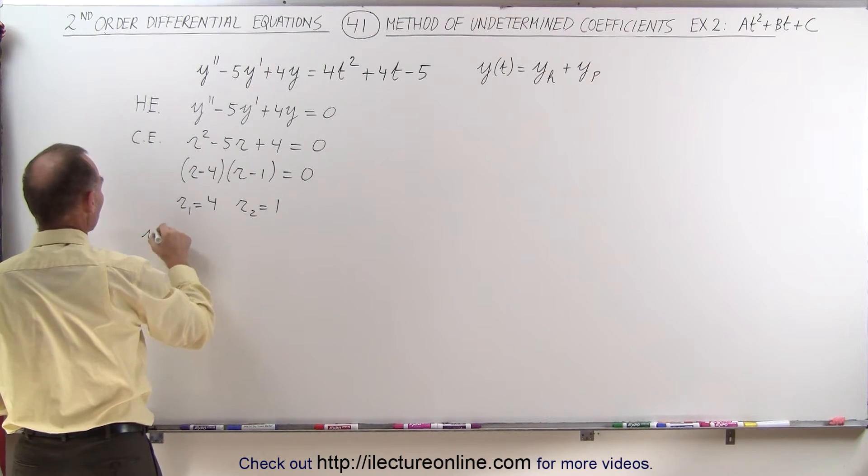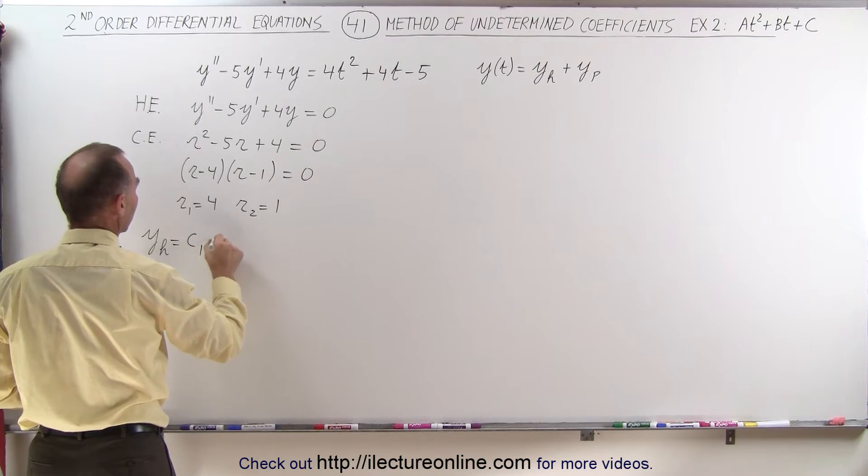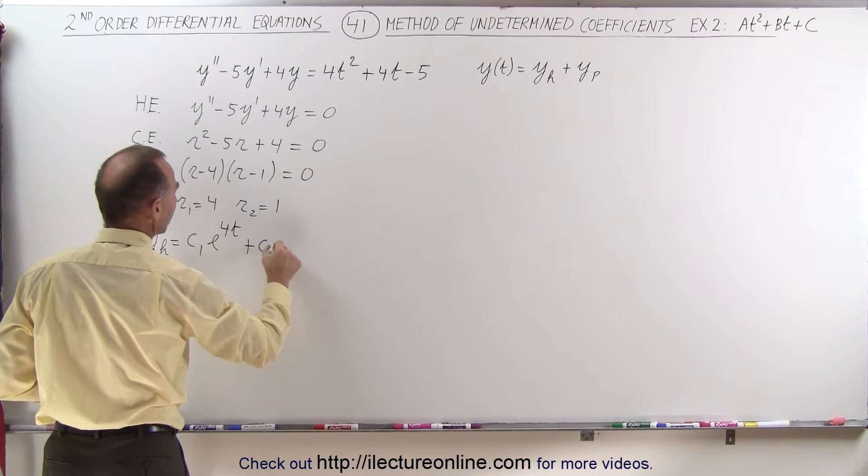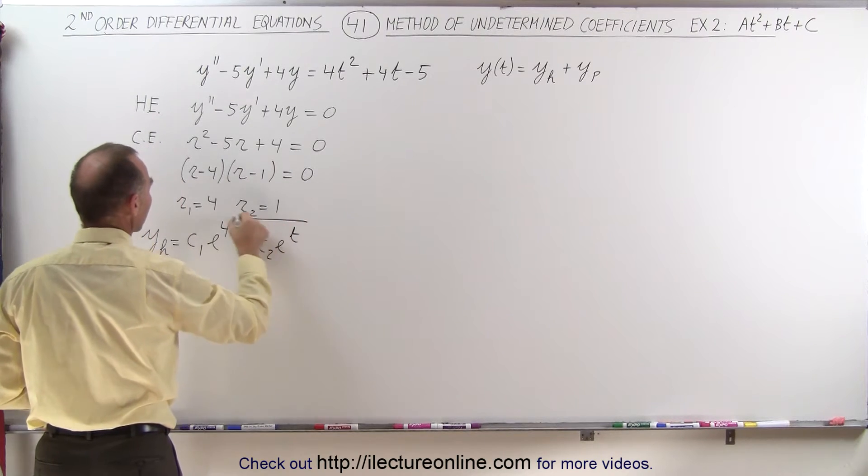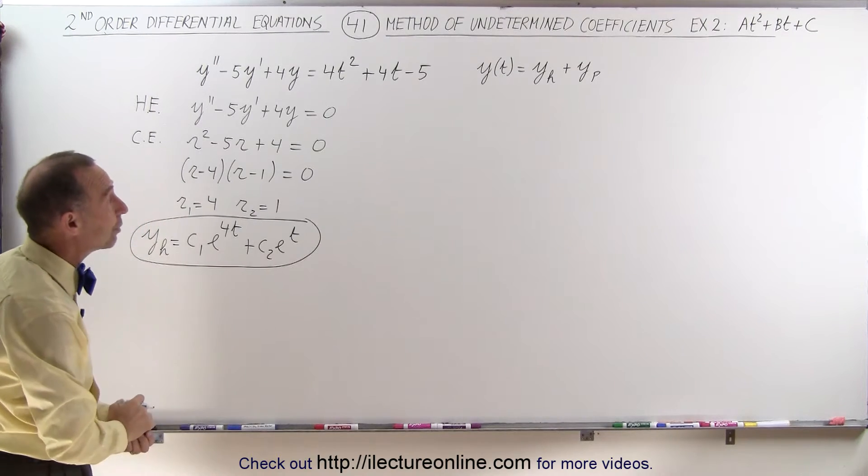And so the homogeneous part of the solution is going to look as follows: equals c1e to the 4t plus c2e to the t. So there's the homogeneous part of the solution just like we did on the previous video.